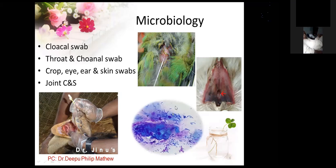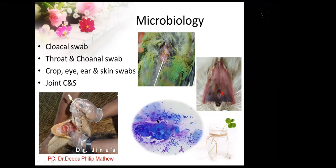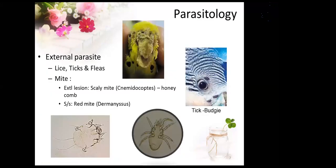You can see the choanal swab smear with rod-shaped organisms. If you suspect canker, candidiasis, or trichomoniasis, you can take a crop swab. Birds are also very prone to joint arthritis — if you have any problem with joint disease, you can take the joint fluid for microbiological analysis. Regarding basic microbiological analysis, that covers the main sample types.